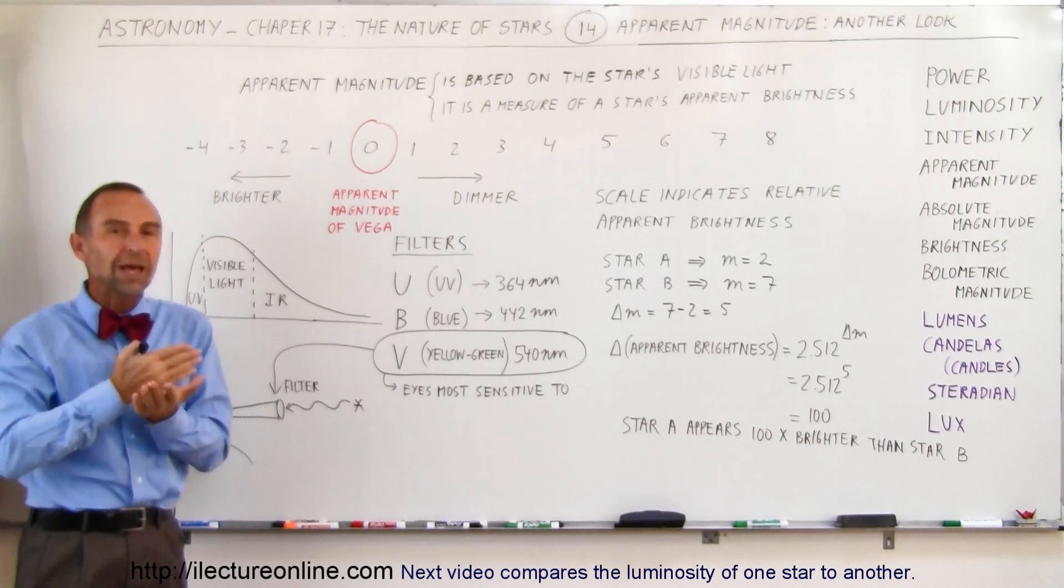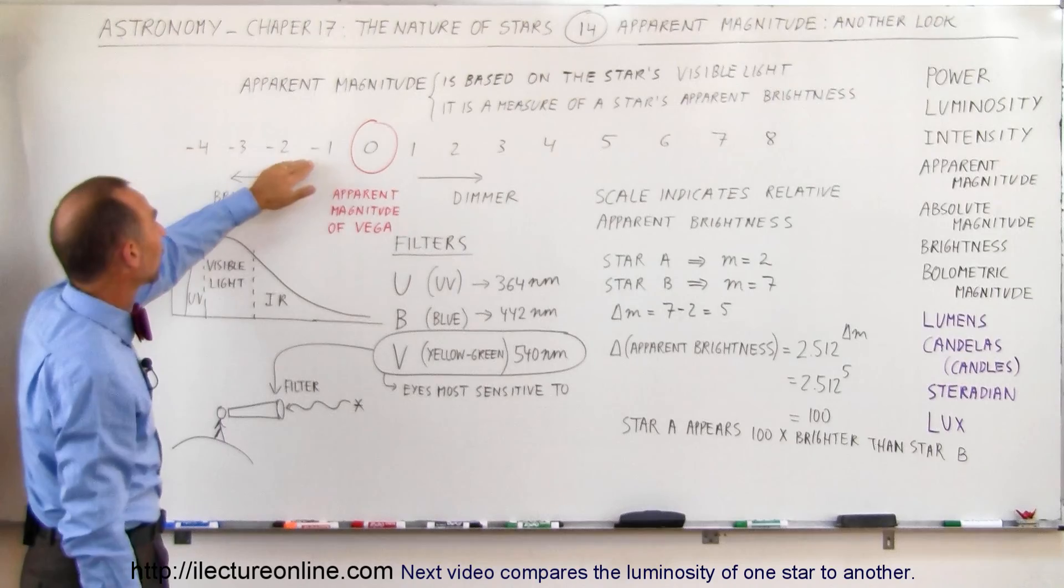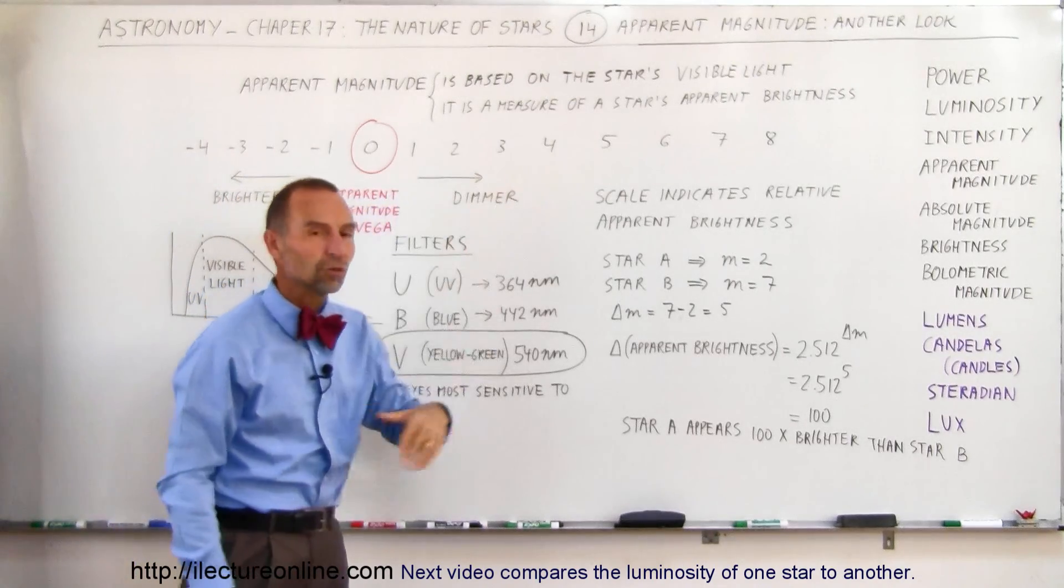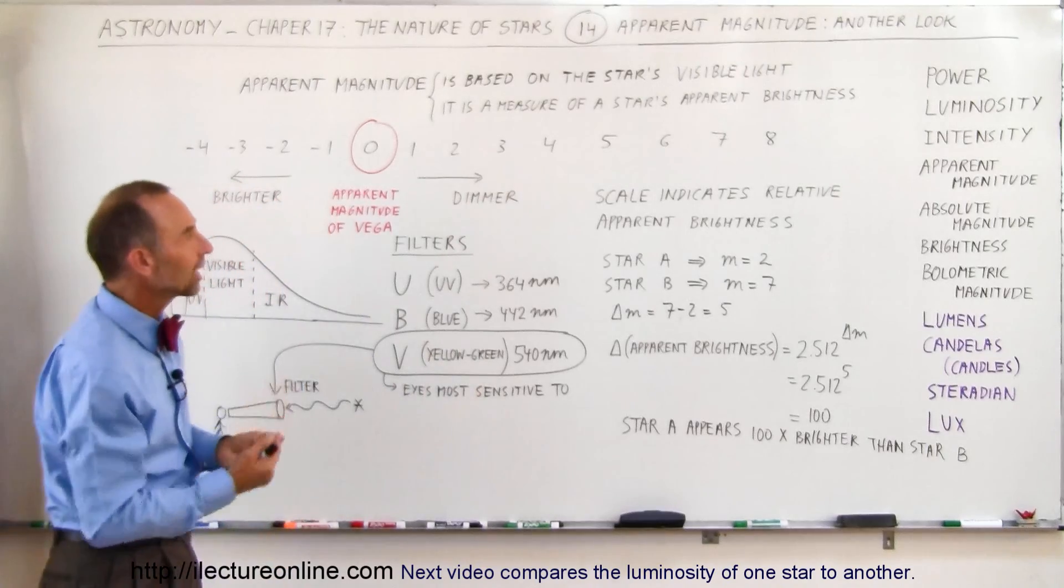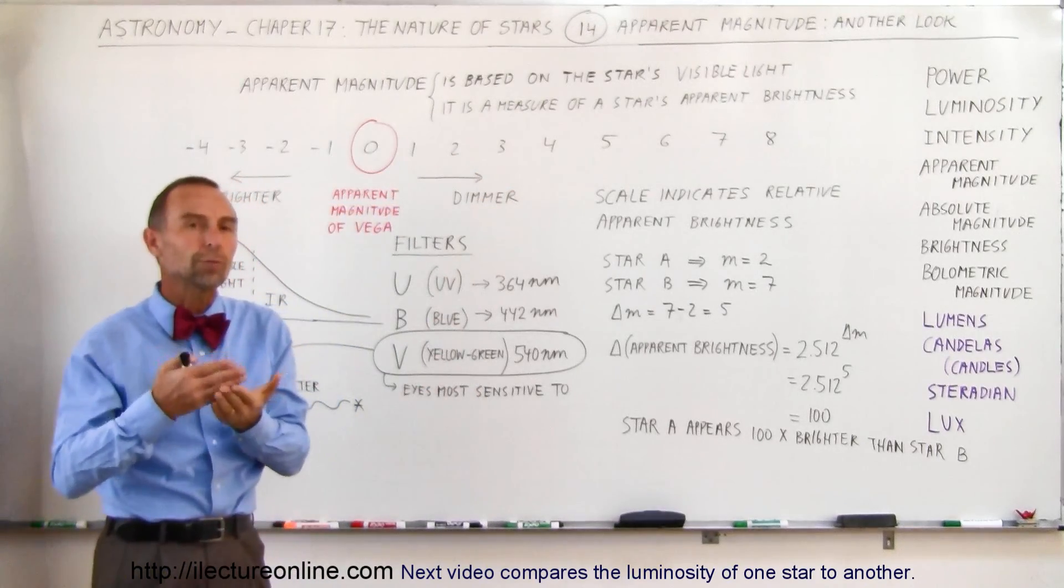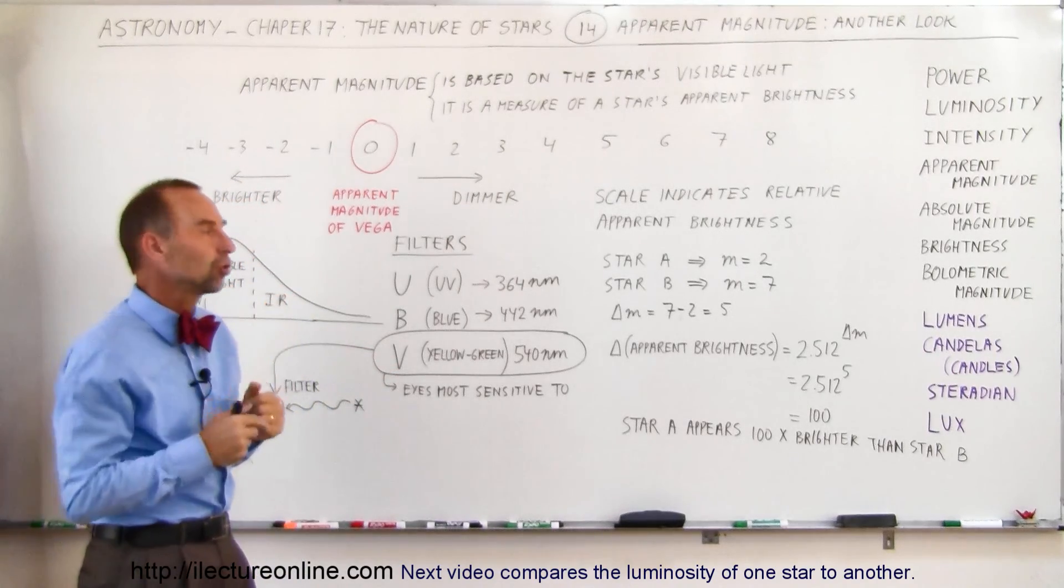And so based upon that, we have a scale called the magnitude scale or the apparent magnitude scale, where smaller numbers means brighter and larger numbers means dimmer. The way the scale works is that for every increase of one magnitude, the star will be either 2.5 times brighter or 2.5 times dimmer than the other star.